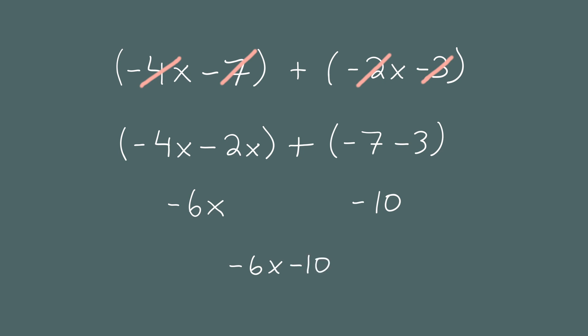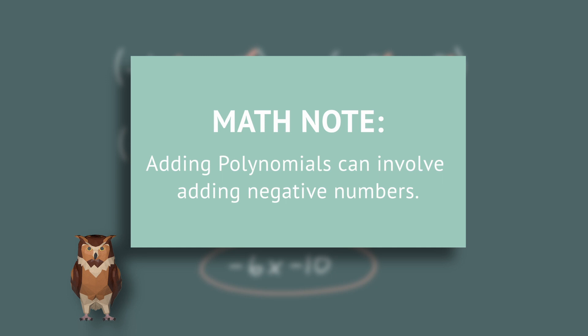Let's see a different type of example. Negative 4x minus 7 plus negative 2x minus 3. Don't let all the negative numbers distract you. The process is the same. Combine like terms. First, we group negative 4x and negative 2x. Then we group negative 7 and negative 3. Combining the terms negative 4x and negative 2x gives us negative 6x. And negative 7 minus 3 is negative 10. So the sum of these two polynomials is negative 6x minus 10. Just because we're adding polynomials doesn't mean the coefficients need to be positive. You can add negative numbers just like you can add positive numbers.